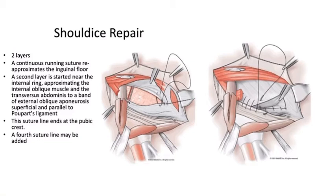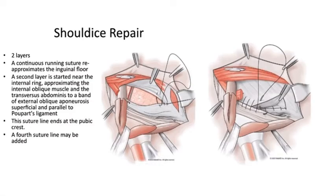Next, we have the Shouldice repair, which involves two layers. A continuous running suture re-approximates the inguinal floor. A second layer is started near the internal ring, approximating the internal oblique muscle and transversus abdominis to a band of external oblique aponeurosis, superficial and parallel to the inguinal ligament. This suture line ends at the pubic crest. A fourth suture line may also be added.